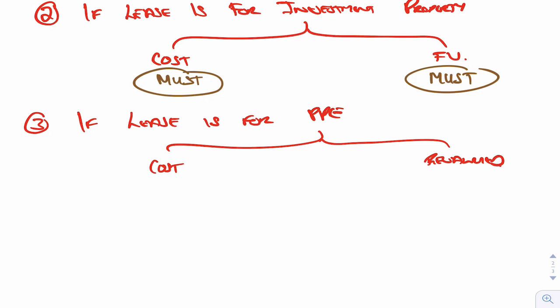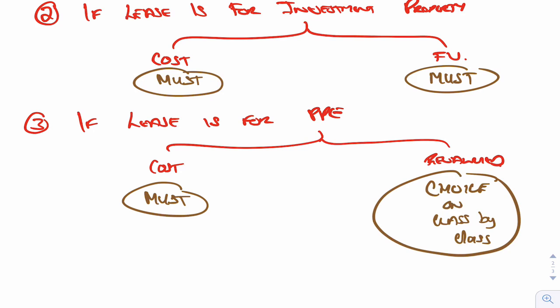PPE is another one — for PPE you also have a choice of cost or revaluation. If your policy for PPE is cost and you get a lease for some PPE, then that right-of-use asset must also be valued at cost. However, if your policy for PPE is to revalue, and you get a lease for some PPE, this time you get a choice. You don't have to revalue — even though your policy is to revalue, if it's a lease for PPE you have a choice on a class-by-class basis whether to keep it at cost or whether to revalue it.